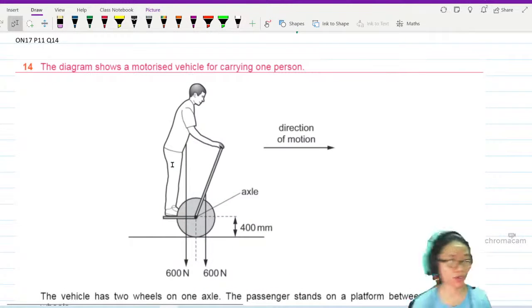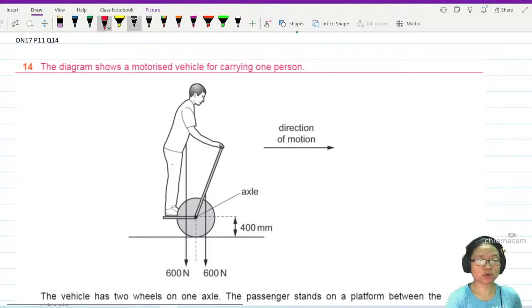Winter 17, paper 1-1, question 14. The diagram shows a motorized vehicle for carrying one person.